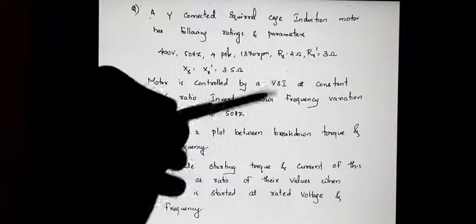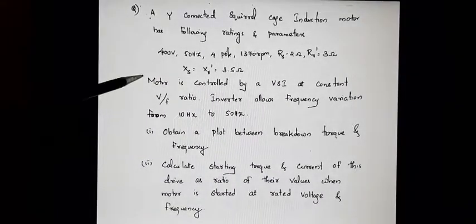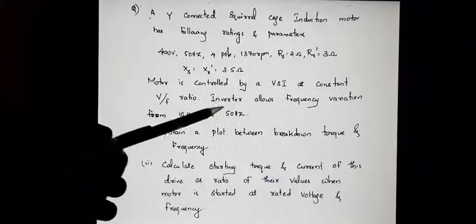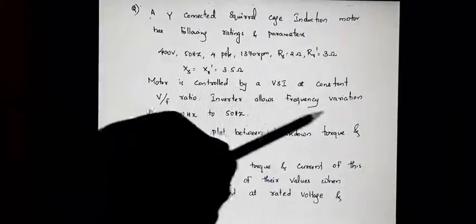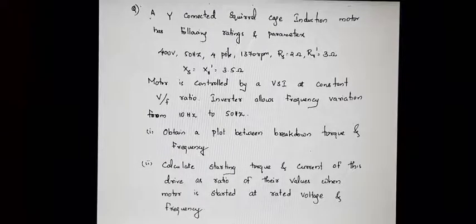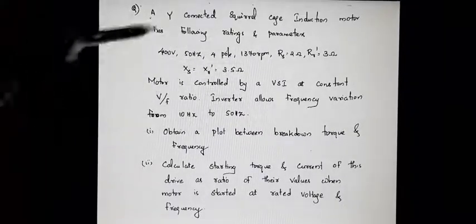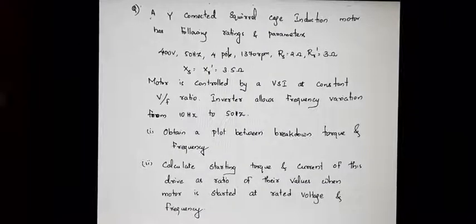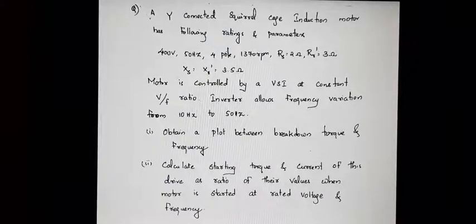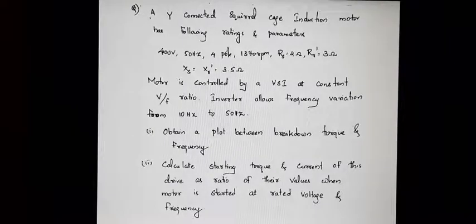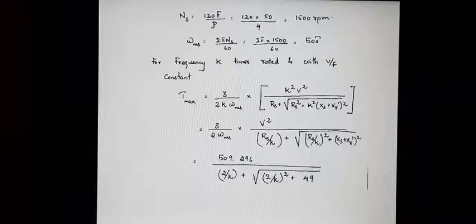The motor is controlled by a VSI (voltage source inverter) at constant V/f ratio. This inverter allows frequency variation from 10 Hz to 50 Hz. In the first part it is asked to plot between breakdown torque and frequency — breakdown torque is the maximum value of torque. Let's see how we are going to solve this first part, then we will move to the second part.